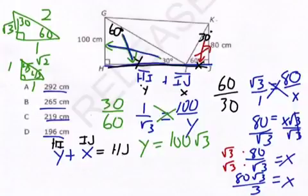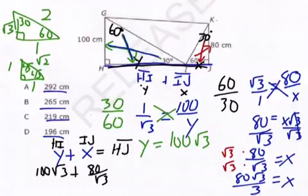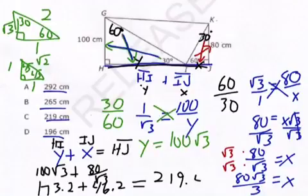So I'm going to do 100 square root of 3. I can type that in my calculator, hit enter. And then put plus, and the calculator will say answer plus, and then I'm going to type in 80 divided by square root of 3. And that should give me 173.2 plus 46.2, which gives me 219.4. Now this does say approximate, so the best answer is going to be C.